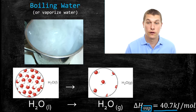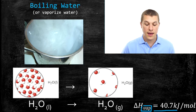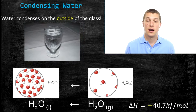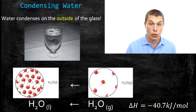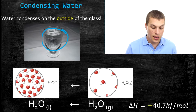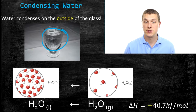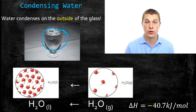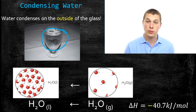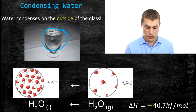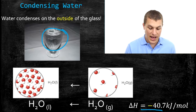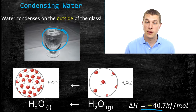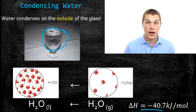What if we do the process in reverse and let that gas condense into a liquid? We see condensation all the time — if you have a cold glass, water from the air condenses on it. Those water molecules go from gas to liquid and actually warm up your glass, because as they condense, the water molecules get closer together and release that same energy you put into them when boiling. Since this is an exothermic process, we have a negative enthalpy: -40.7 kilojoules per mole of water condensing.